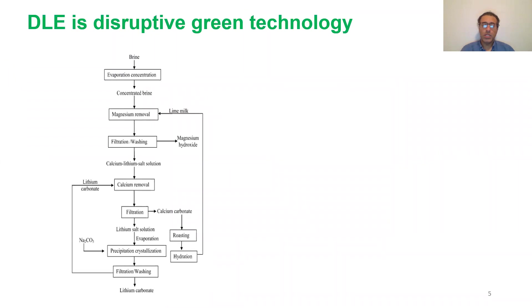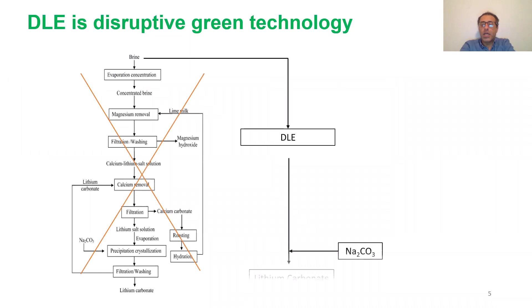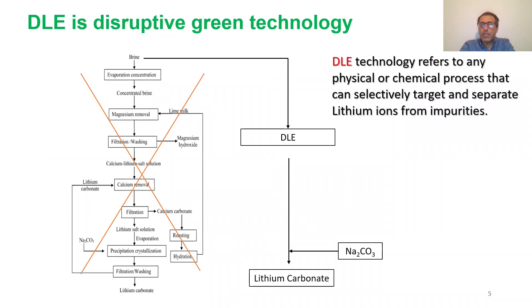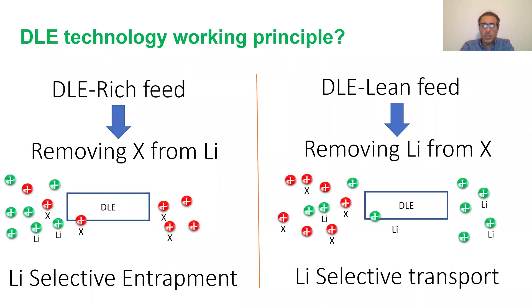This is a typical flowsheet for producing lithium carbonate from brine, and DLE can replace many separation and purification stages in the production line. DLE technology refers to any physical or chemical process that can selectively target and separate lithium ions from impurities. We have two types: DLE rich-feed, where impurities are removed from the feed, and DLE lean-feed, where lithium ions are removed from the feed.